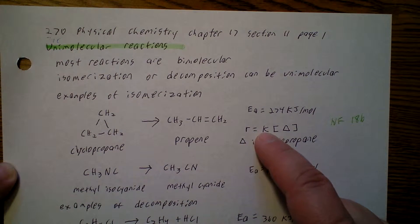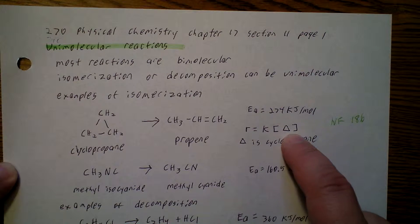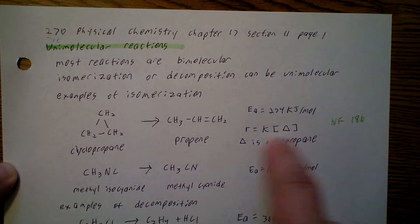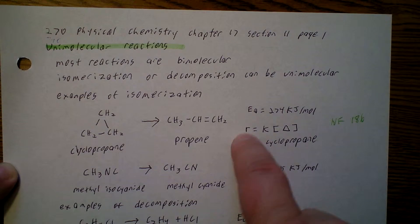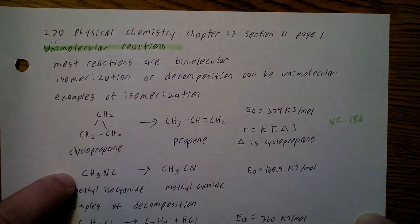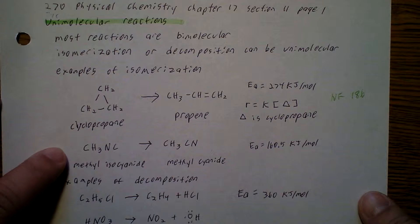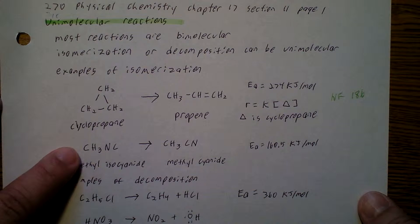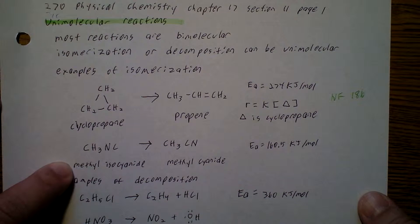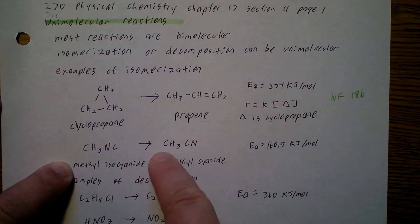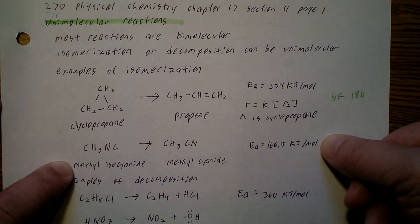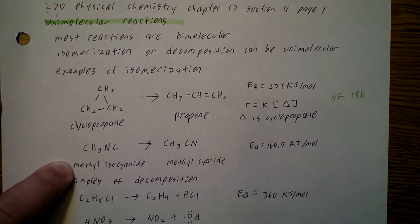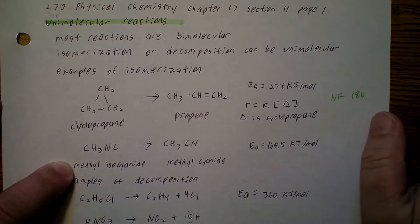So R is going to be equal to a constant times the concentration of cyclopropane, because we're just showing the carbon atoms in a circle. Here's another example of an isomerization: CH3NC, so this is methyl isocyanide, going to CH3CN, methyl cyanide. And again, the energy of activation for this is not zero, it's 160.5 kilojoules per mole.